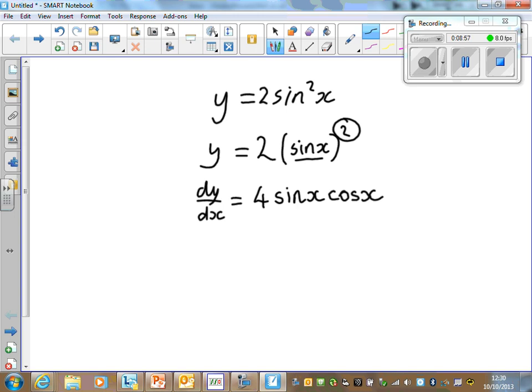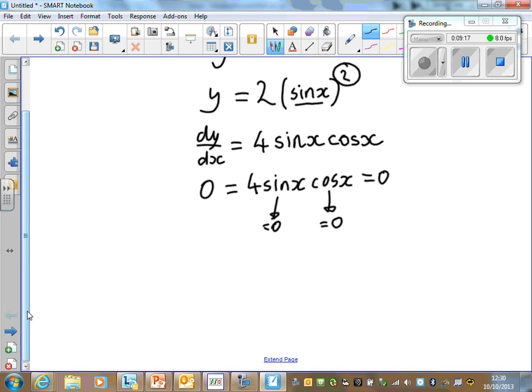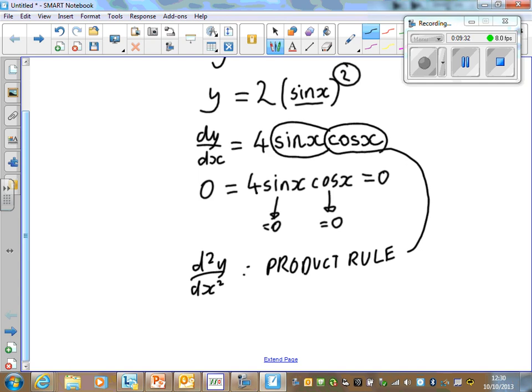If you're going to find stationary points, you have to make 4 sin x cos x equal to 0, which means that sin x could be equal to 0, which also means that cos x is equal to 0. So you're going to have lots of stationary points there. If you're going to find the second derivative, use the product rule. Because here, we've got one function multiplied by another function.